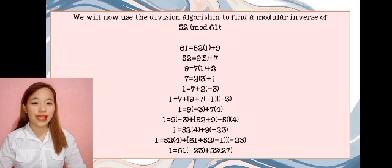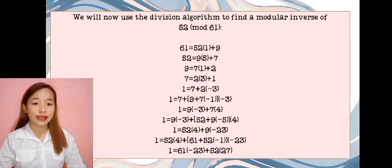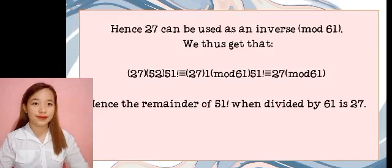1 equals 7 plus 2 times negative 3. 1 equals 7 plus 9 plus 7 times negative 1 times negative 3. 1 equals 9 times negative 3 plus 7 times 4. 1 equals 9 times negative 3 plus 52 plus 9 times negative 5 times 4. 1 equals 52 times 23 plus 9 times negative 23. 1 equals 61 times negative 23 plus 52 times 27.